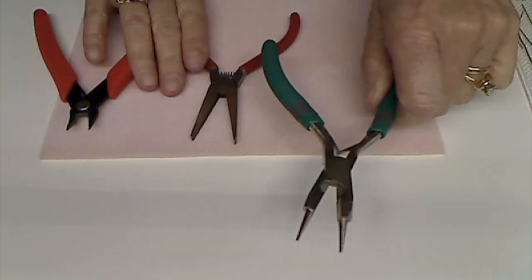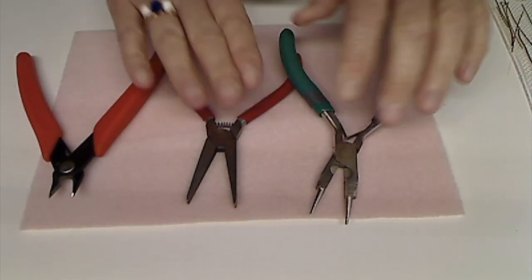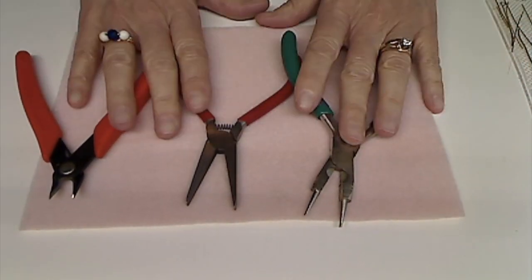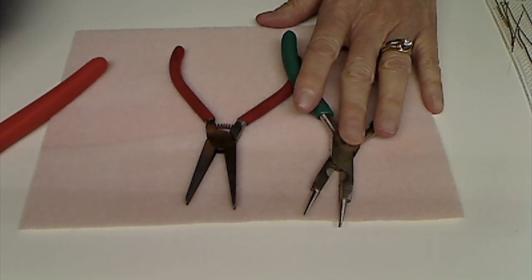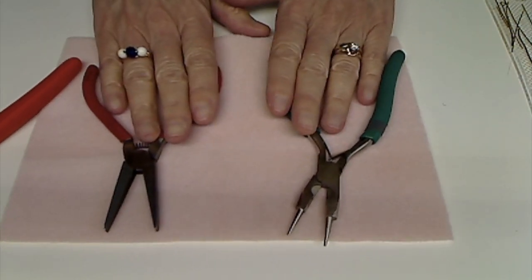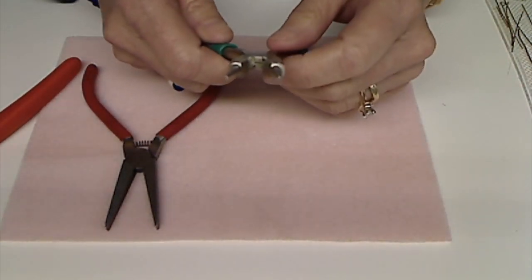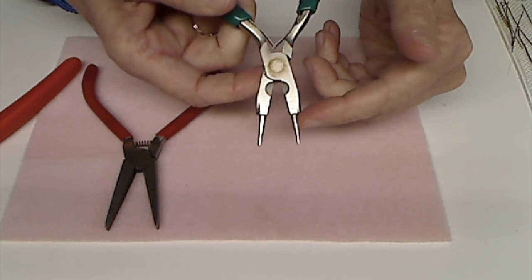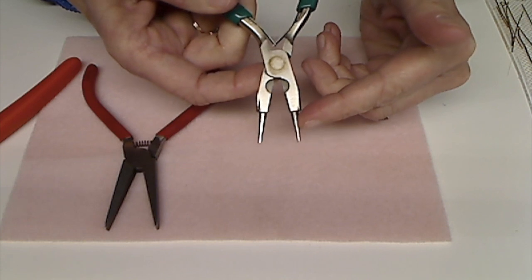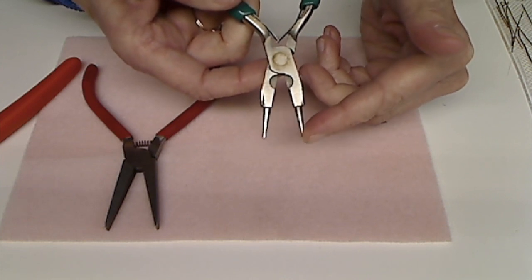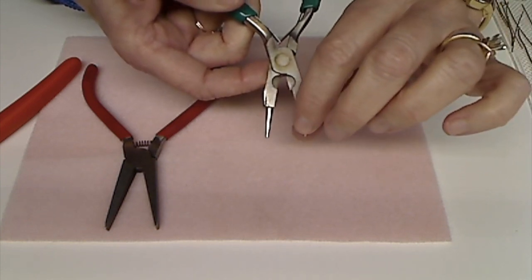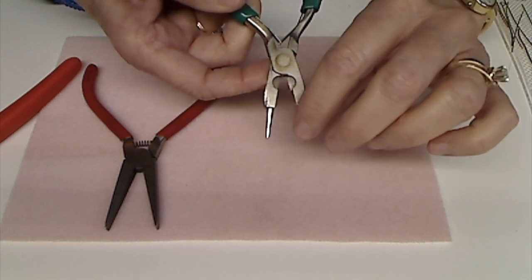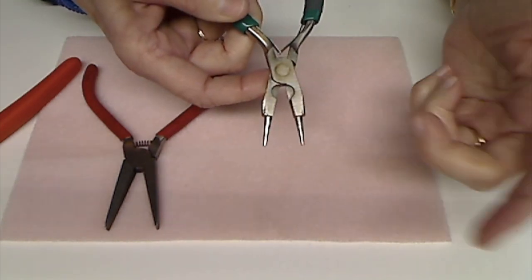So the first set, and I call these pliers, my husband does too, so I'm sure that's the right word. These two are pliers, so these are round nose pliers. You can see that this part is round and this is where you're going to create loops and things like that, and I'll show you that later.